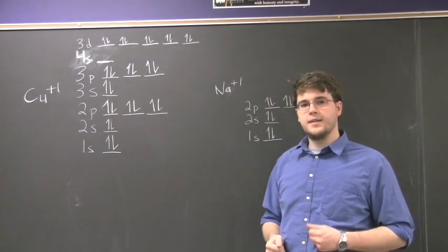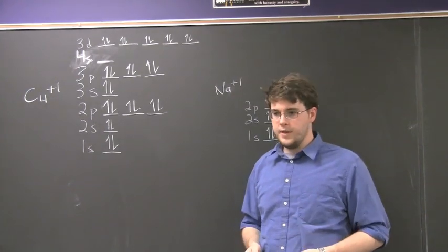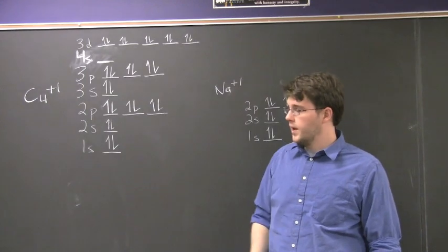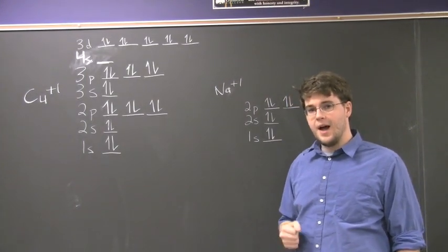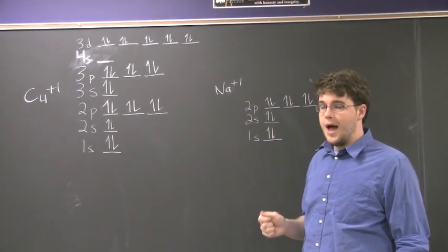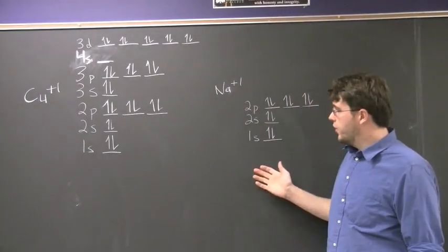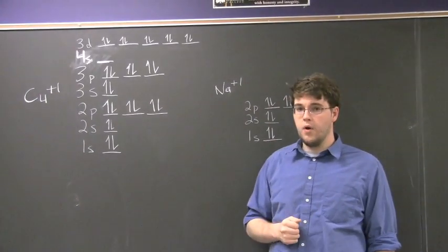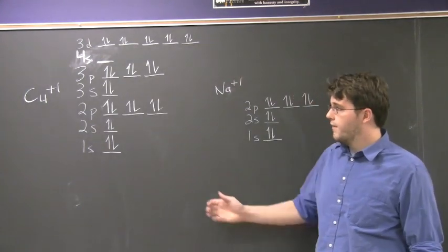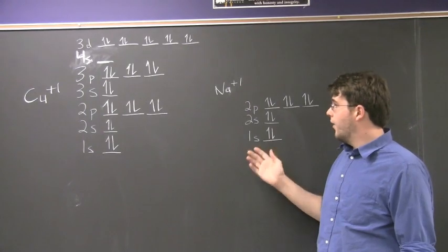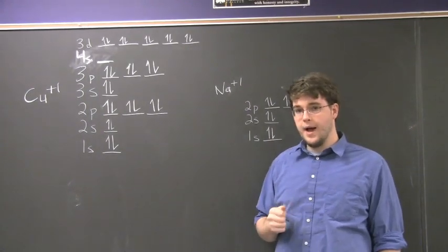And the copper one-plus, when reacted with sulfides and oxides, will not be soluble in water, while the sodium one-plus ion will. And this is due to the covalency that copper one-plus ion displays, while Na one-plus is more ionic.